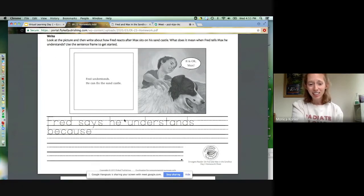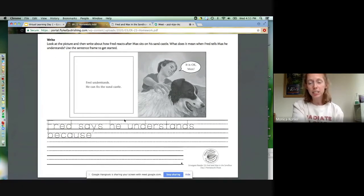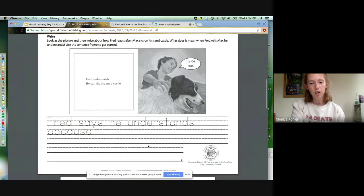I think he's saying he understands because he knows I can build a sandcastle again. I can build another one. He probably really loves Max, and Max is his dog. And he tells Max, it is okay Max. So he's telling him it's okay. Our sentence frame says Fred says he understands because. So if you're going to do this at home, you can write in and finish your sentence right here.